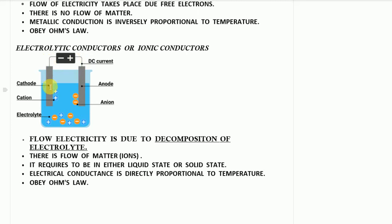Because of the potential difference created by the positively charged anode and negatively charged cathode, the electrolyte — a molecule made of positive and negative ions, for example NaCl formed from Na⁺ and Cl⁻ — gets dissociated again into Na⁺ and Cl⁻. Since opposite charges attract, the positively charged Na⁺ ions, known as cations, move toward the negatively charged cathode, and the negatively charged ions, known as anions, move toward the positively charged anode.